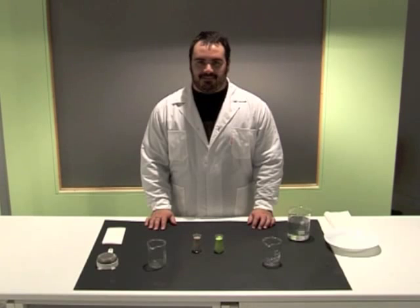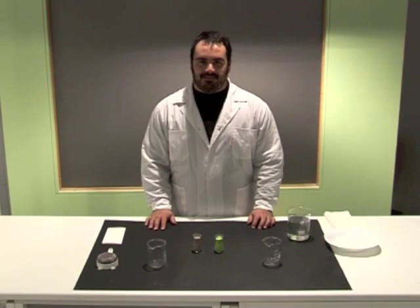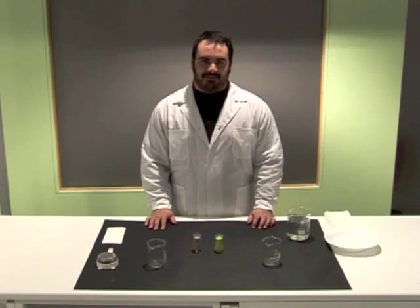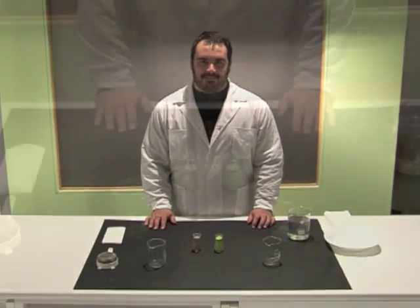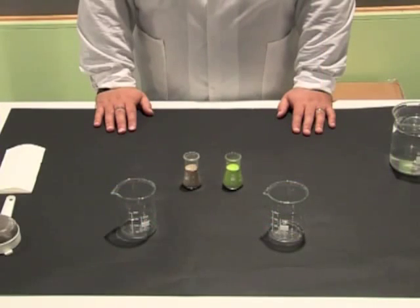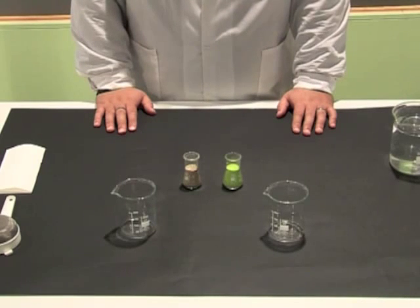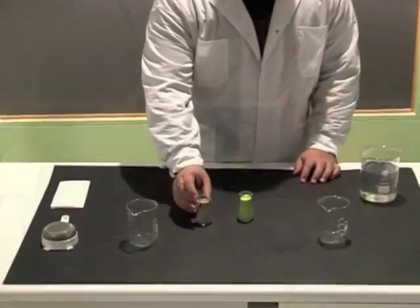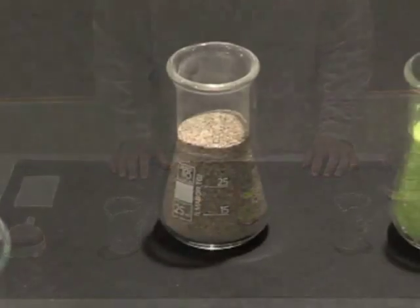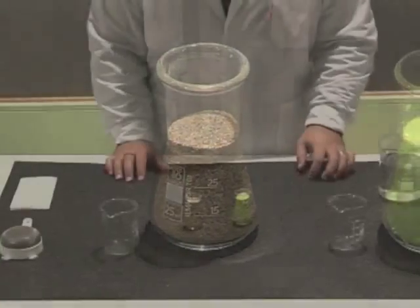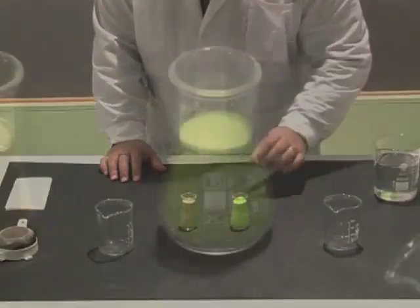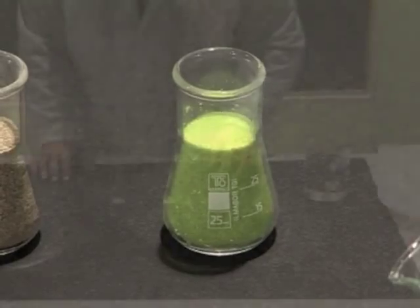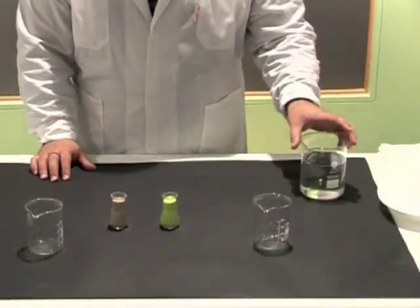Hydrophobic sand. In the following experiment we will show how by interfering in the structure of materials at microscopic level using nanotechnology, we can change the properties these materials develop at macroscopic level. In order to perform this experiment we will use hydrophobic sand. We will need a small quantity of regular sand, a small quantity of hydrophobic sand, and water.